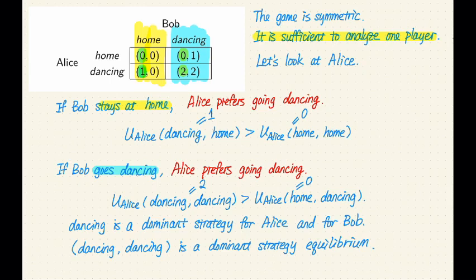And here that's the case because going dancing is definitely weakly better than stay at home regardless of Bob's strategy. And the second condition is that Alice should strictly prefer going dancing than staying at home for at least one strategy of Bob.